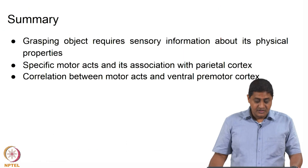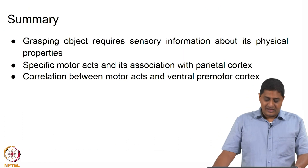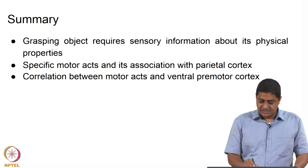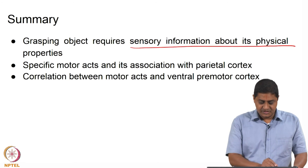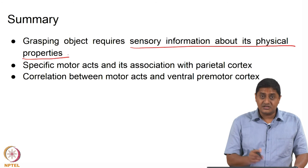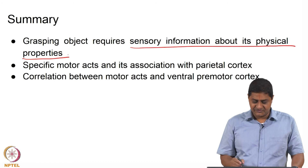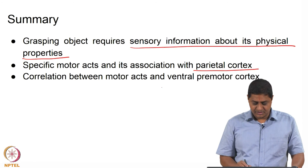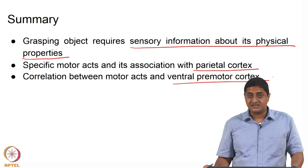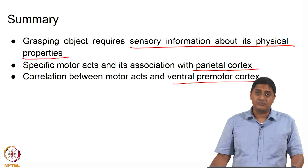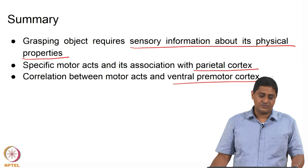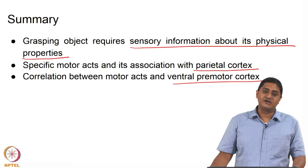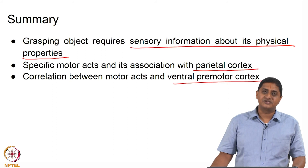In summary, grasping an object requires sensory information about its physical properties — what the object is, its size — and specific motor actions are associated with parietal and ventral premotor cortex activity. With this, we come to the end of this lecture. Thank you very much for your attention.